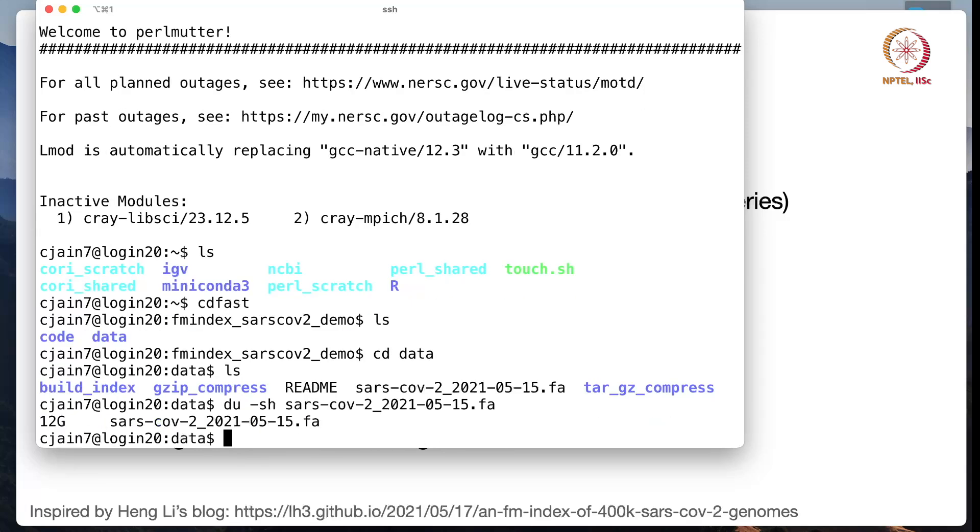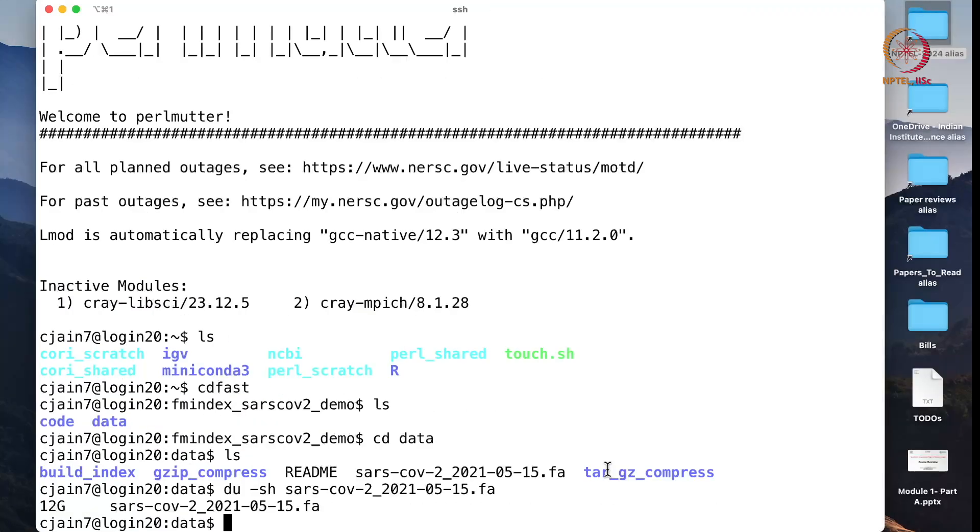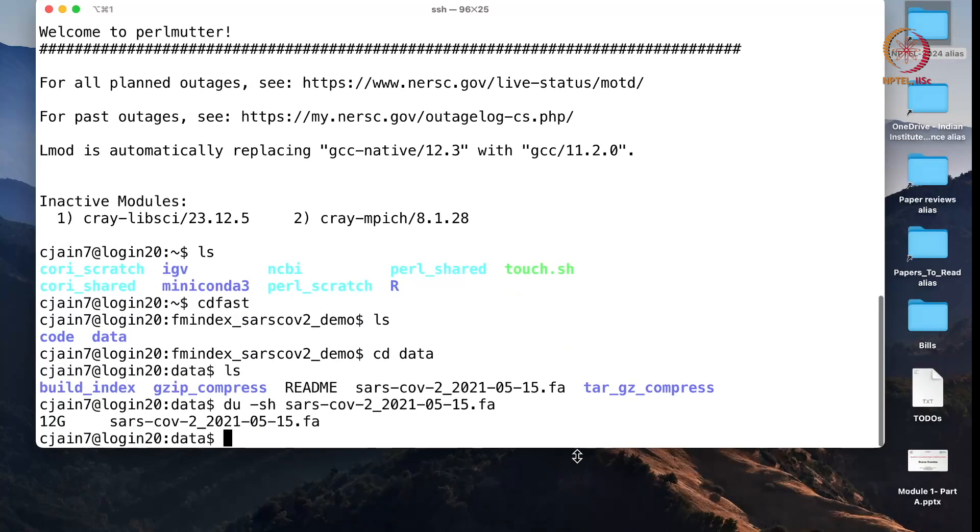The collective size of this file is 12 GB. If I look at these files, this file is stored in a format known as FASTA format. If you open it up, you will see the individual genome sequences.